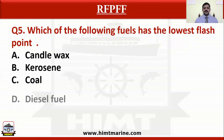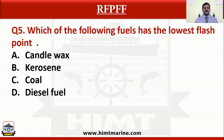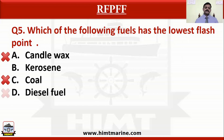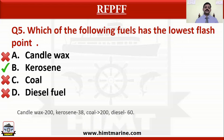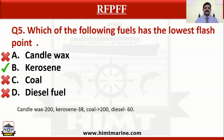Which of the following fuels has the lowest flash point? Option A candle wax, option B kerosene, option C coal, option D diesel fuel. Candle wax has a flash point around 200°C, coal also above 200°C, diesel fuel around 60°C, whereas kerosene has only around 38°C. So kerosene is the correct answer.